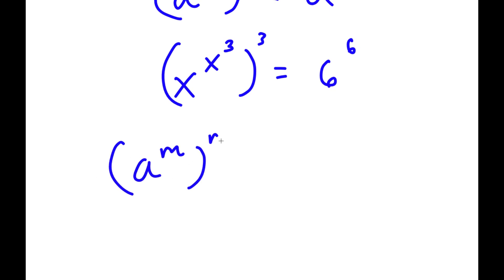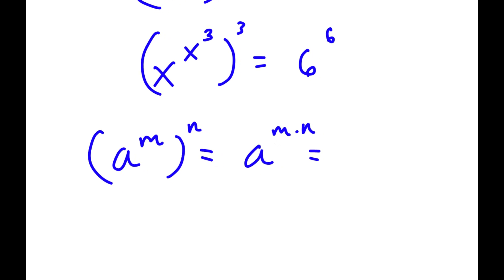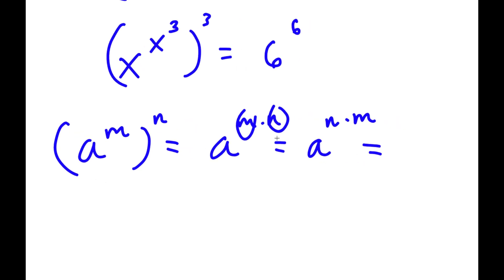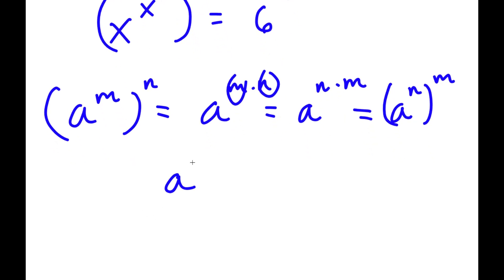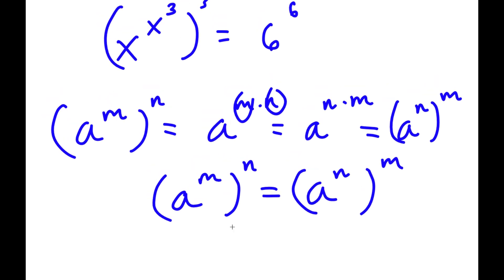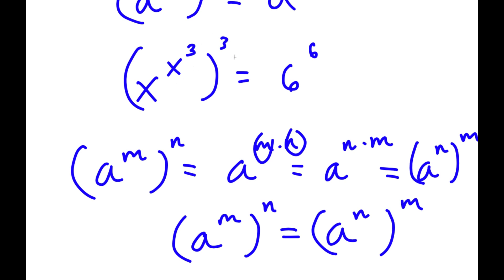Now if I have something in the form a to the power of m to the power of n, this is the same thing as a to the power of m times n. And m and n — I can switch the place of these two because in multiplication you can switch the order. So this is the same thing as a to the power of n times m, which means a to the power of m to the power of n also equals a to the power of n to the power of m. So you can switch the places of these two exponents. In this case I have x to the power of x to the power of 3, to the power of 3, and I can think of x to the power of 3 as m and 3 as n.